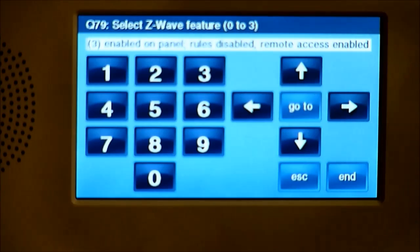So once we've selected number 3, Enabled on Panel, Rules Disabled, Remote Access Enabled, we now have the Z-Wave feature on and want to go and turn on the different home automation devices one by one.